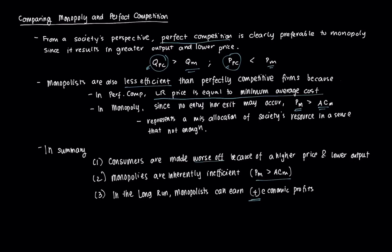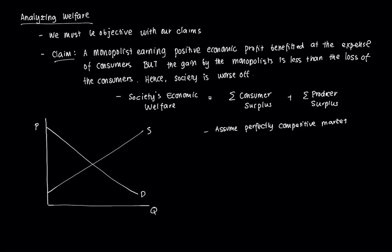We need to show this objectively through welfare analysis. We're going to show that the monopolist earning positive economic profit benefits at the expense of consumers, but the gain in profit of the monopolist is less than the loss on the consumer side. This implies that society is worse off than if it were operating perfectly competitively. Societal welfare is essentially the sum of all individual consumer surpluses plus producer surplus — simply, CS plus PS.